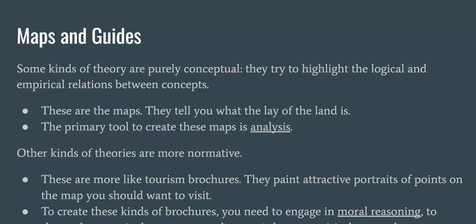Other kinds of theories are more normative — they're more like tourism brochures. They paint attractive portraits of points on the map that you should really want to go to and stay and maybe live in. To create these kinds of brochures, you need to engage in moral reasoning — reasoning that will show which particular country or neighborhood on the map is better to visit than another. That kind of theory is a normative political theory that tells you that you should live in this kind of political system under these kinds of rules rather than a different set.